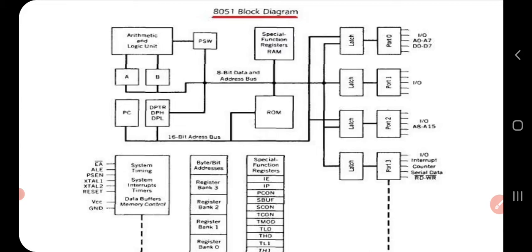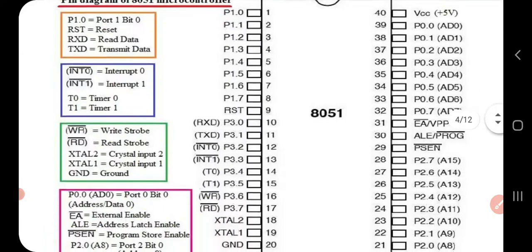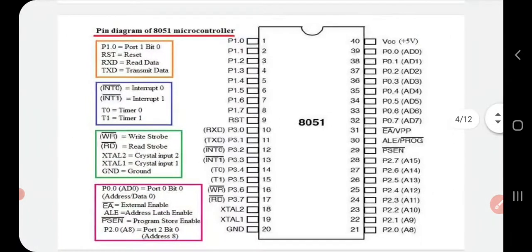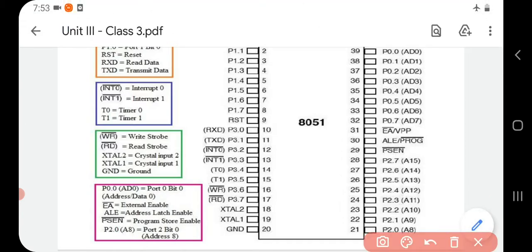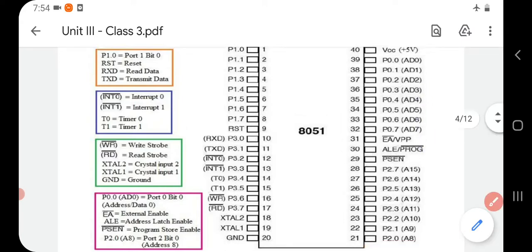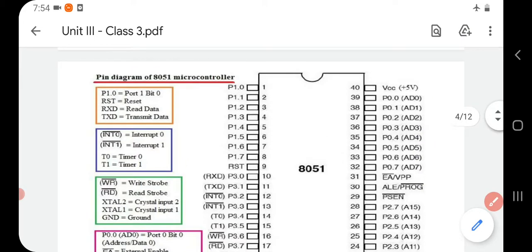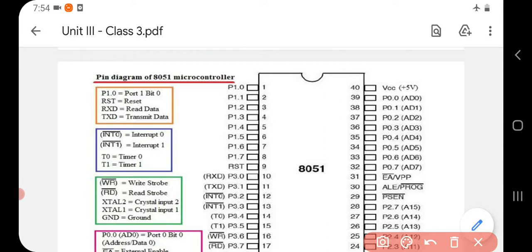This pin diagram shows that the 8051 has 40 pins, numbered accordingly. The description of each pin is given on the left side. P1.0 stands for Port 1 bit 0, P1.1 for Port 1 bit 1, and so on.